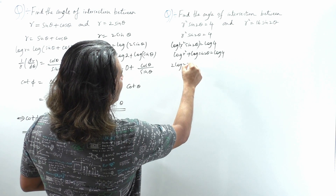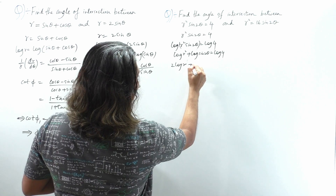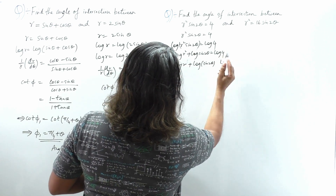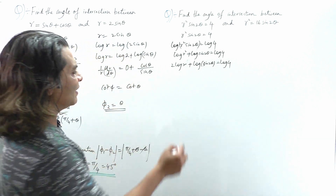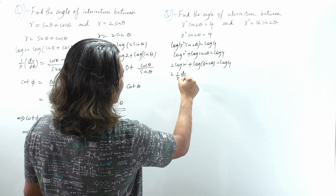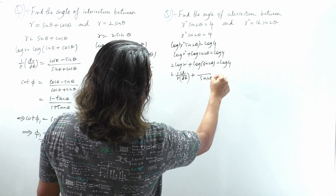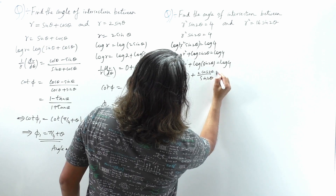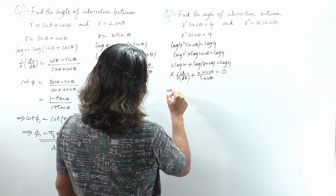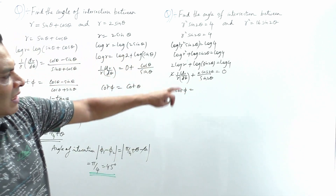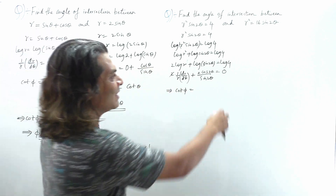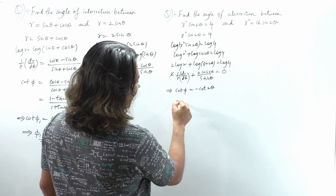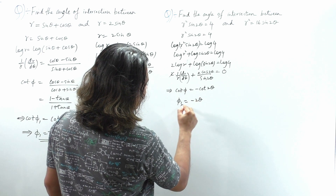Since log(aᵏ) = k·log a, we write: 2log r + log(sin2θ) = log 4. Now differentiating: 2·(1/r)·dr/dθ + (1/sin2θ)·2cos2θ = 0. The 2s cancel, so cot φ = −cos2θ/sin2θ = −cot2θ. Therefore the first angle φ₁ = −2θ.